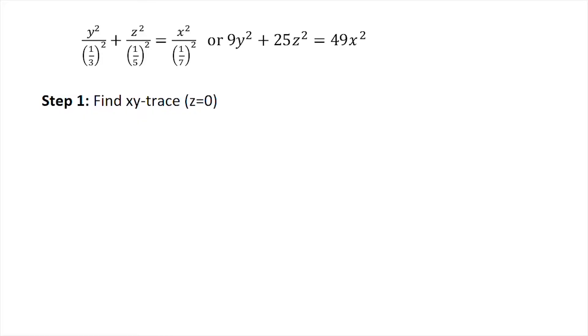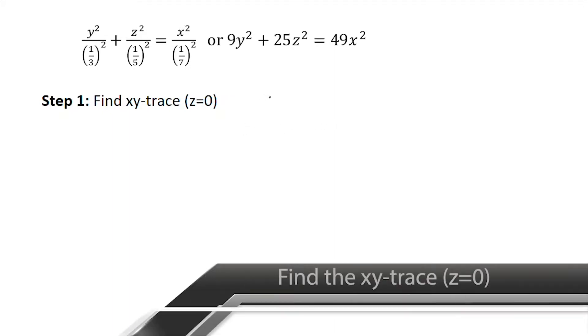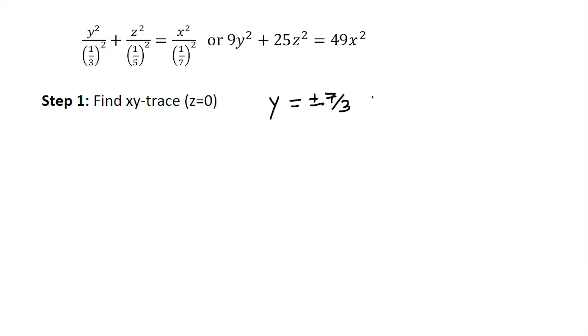The first step is to find the xy-trace, so I'm going to set z = 0. When I set z = 0, I end up with y = ±(7/3)x.